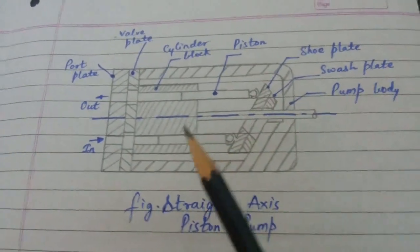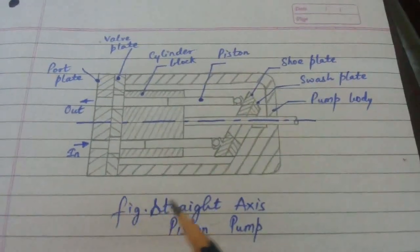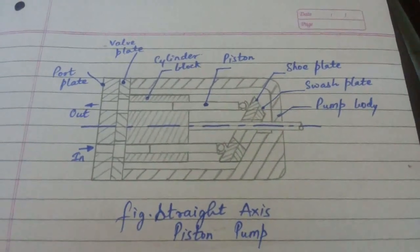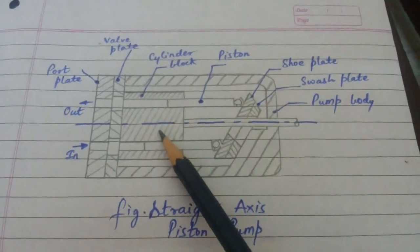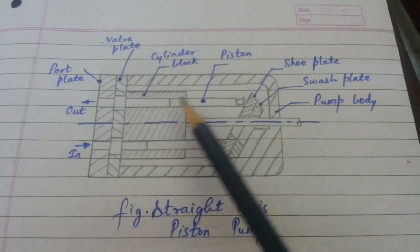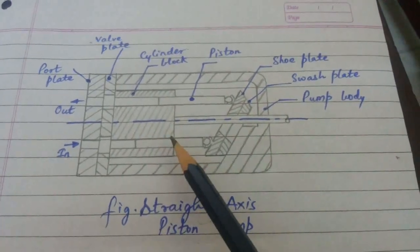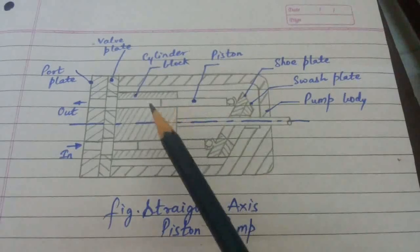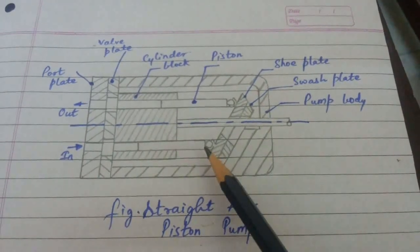Here is cylindrical block. So straight axis piston pump. Here is cylindrical block. There are axial bores. Bores are in the piston. And the other end of the piston is shoe plate.